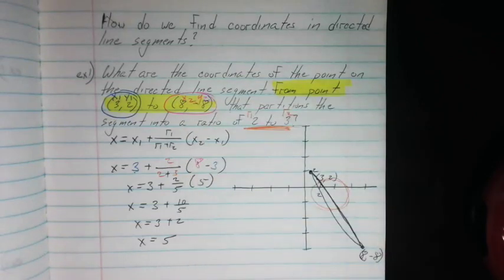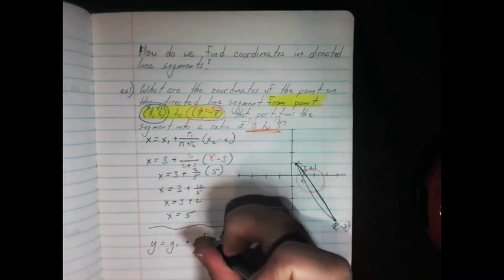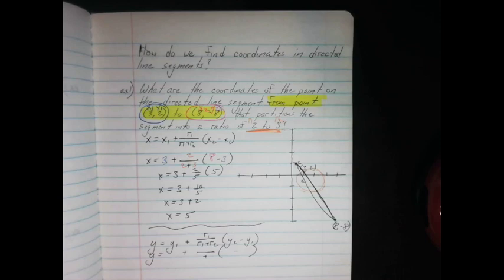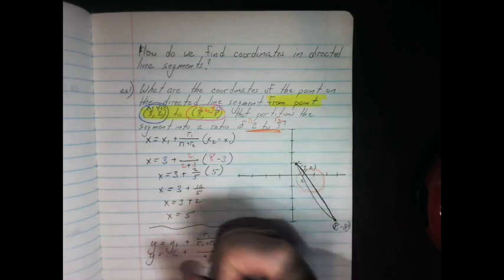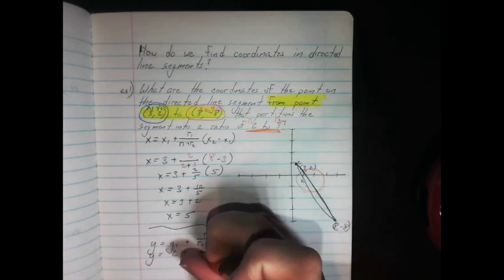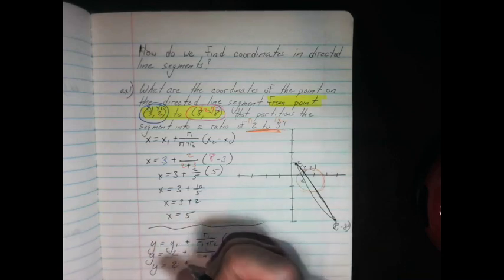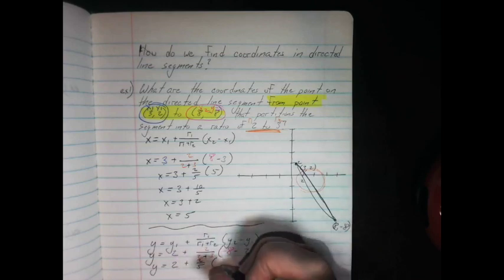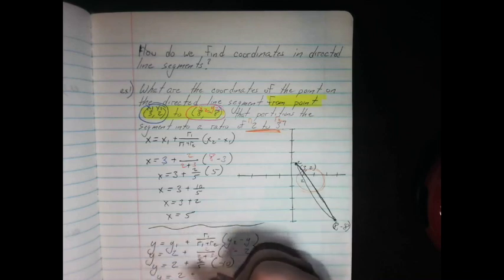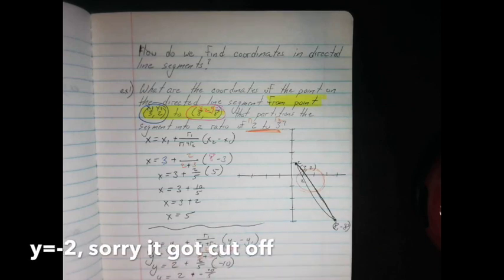Now that was for our x. Let's do it for our y. And we can use a really similar formula. Every place there is an x, we just replace it with a y. You'll notice the ratio stays the exact same. That's because we're working with the same directed line segment. Now let's just simplify everything. Cool. So we've gone and simplified everything that we needed to here.